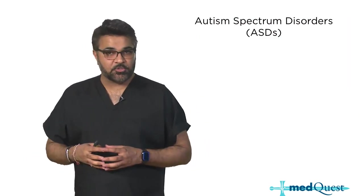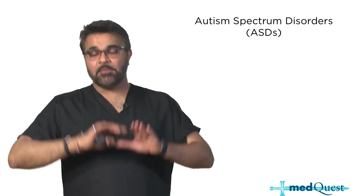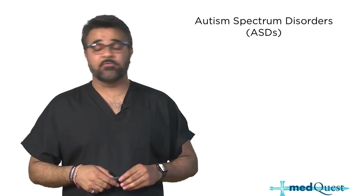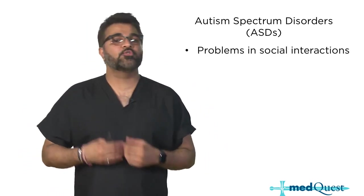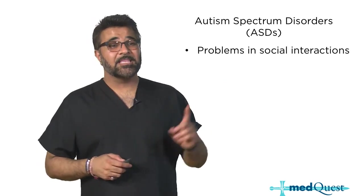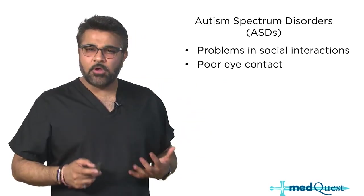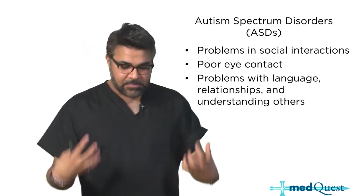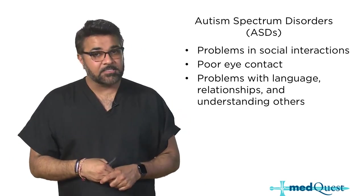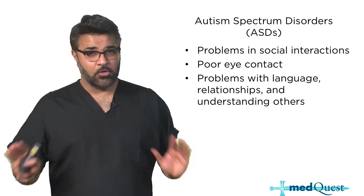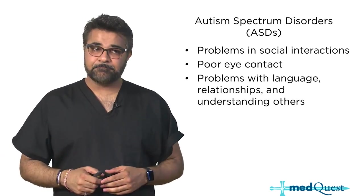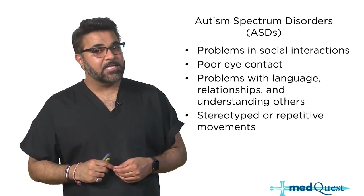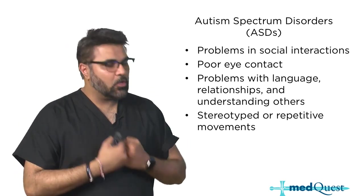Moving on to autism spectrum disorders - this is the umbrella term for all autism spectrum disorders. Things like Asperger's have been removed from the DSM-5. These people have trouble with social interactions, poor eye contact, language, relationships, and understanding others. Most importantly, there is no link whatsoever to vaccinations and autism. Other aspects include stereotyped or repetitive movements, difficulty with change - they're described as inflexible - and difficulty with change in routine.